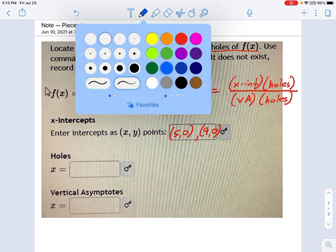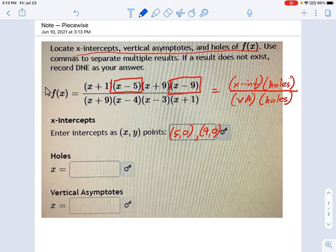Now let's pick another color for vertical asymptotes. Oh no, it wants holes next. Okay, fine, we'll do holes next.